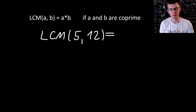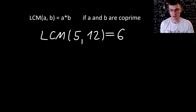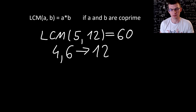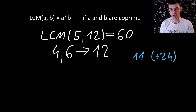If the moduli are co-prime, then their LCM is simply the product — like for 5 and 12 it's just 60. But it doesn't work if there is some common divisor. For 4 and 6, their product is 24 and yet there's a smaller multiple: 12.